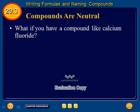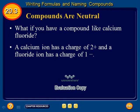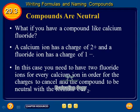What if you have a compound like calcium fluoride? A calcium ion has a charge of 2+ and a fluoride ion has a charge of 1−. In this case, you need to have 2 fluoride ions for every calcium ion in order for the charges to cancel and the compound to be neutral, giving the formula calcium fluoride, CaF₂.